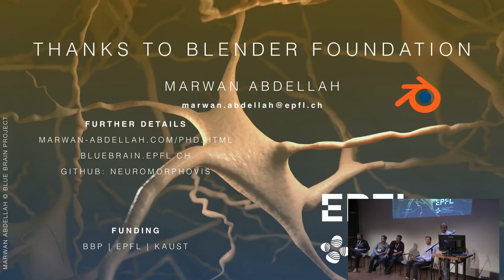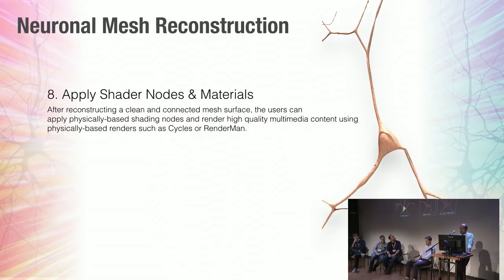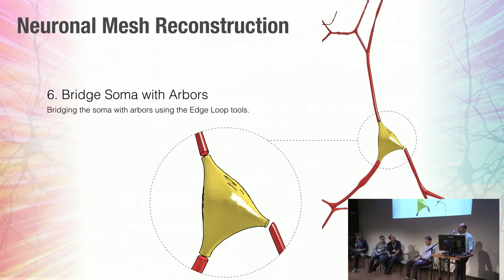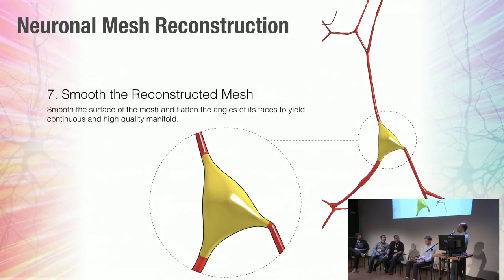I didn't really understand — do you do that in real time to connect them? It's bridging of these gaps, and yes, this is completely automated. I use the Blender API to find where the branches would intersect with the reconstructed soma, then label the faces and use edge loops to bridge — one face on the side of the soma, one face on the side of the arbor. Then they turn into something like this, and I use one smoothing step so it turns into one single complete object.